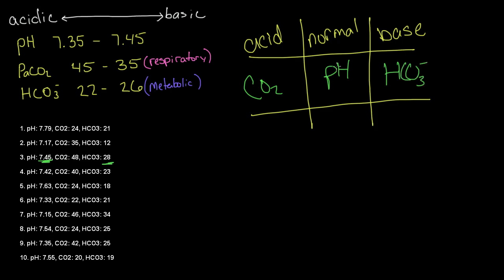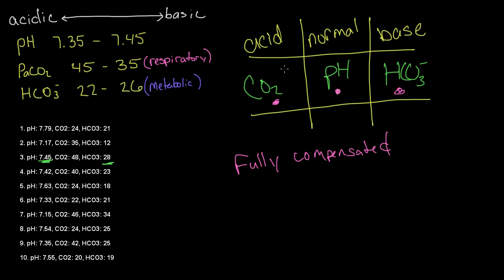When our pH is normal and our other two parameters are both abnormal, we know that we have a case of full compensation, so we can write down fully compensated. Both of these are abnormal, and one of them is going to be more abnormal than the other. So we actually have to do an extra step here to figure out which one of these is being more abnormal.